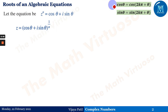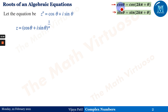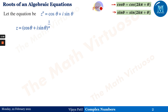Now these are two functions which follow important conditions. Cos θ equals cos(2kπ + θ), and sin θ equals sin(2kπ + θ). This means sin θ and cos θ are known as periodic functions.